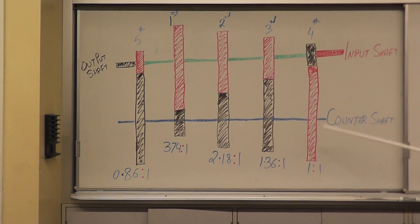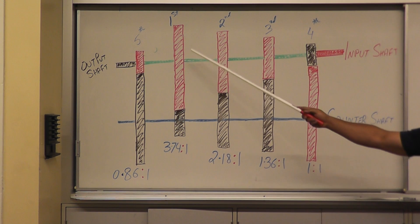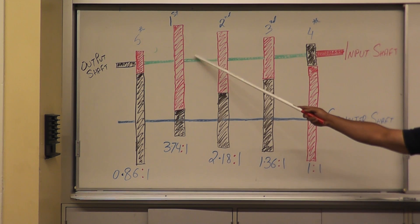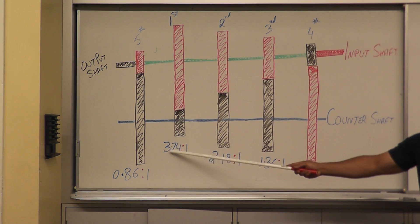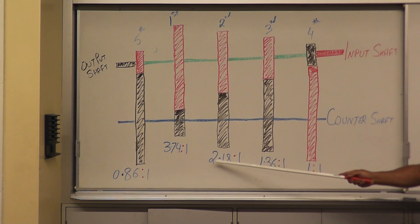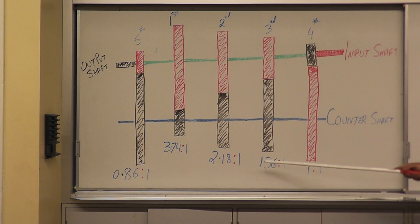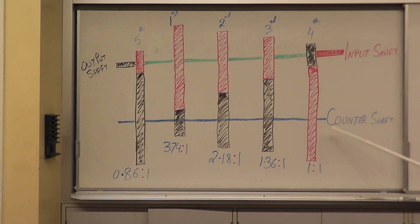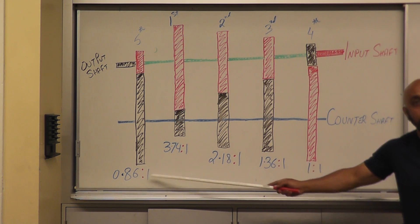Quick review: for first gear the final input versus output shaft speed is 3.74 to 1. Second gear: 2.18 to 1. Third: 1.36 to 1. Fourth gear: 1 to 1 ratio. And fifth gear: 0.86 to 1.